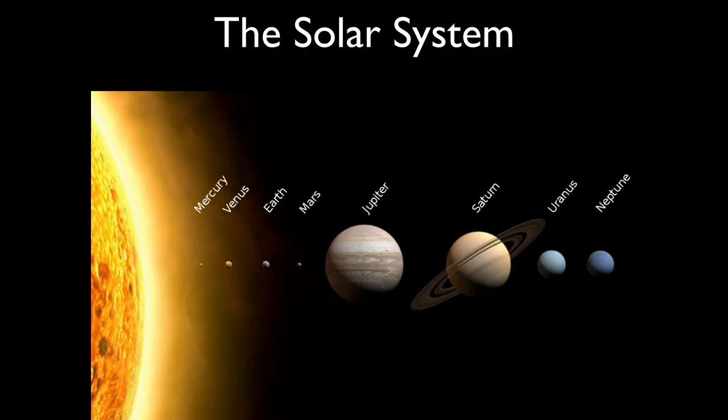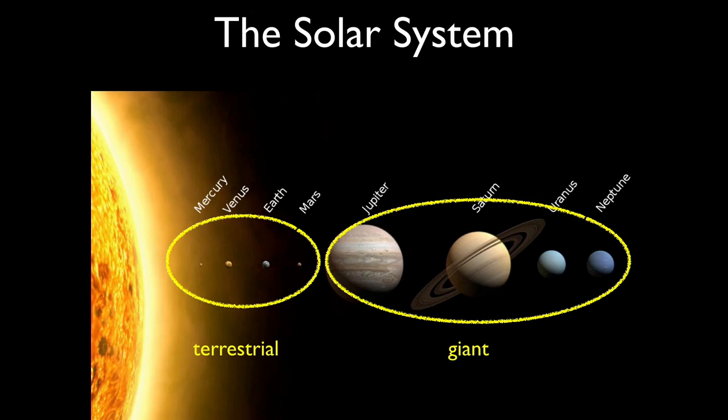To start off, we all know and love our solar system. We've got eight planets: four small rocky terrestrial planets close to the Sun, and four giant planets farther away - two gas giants, Jupiter and Saturn, and two ice giants, Uranus and Neptune.